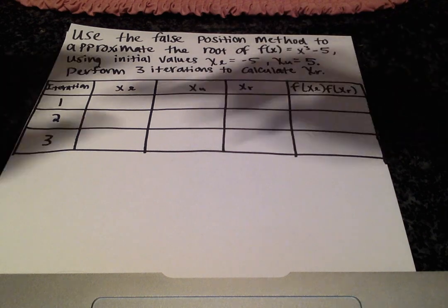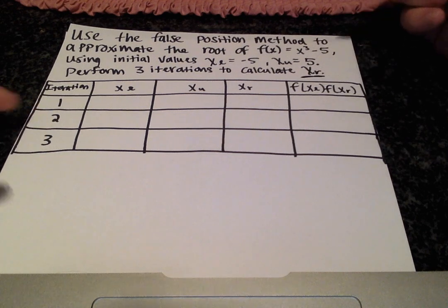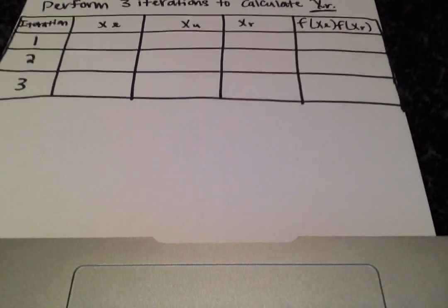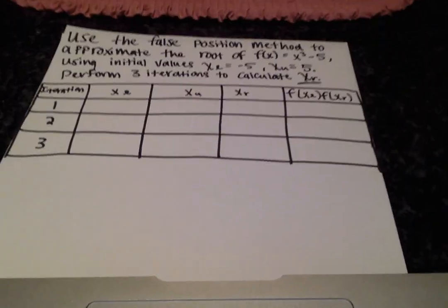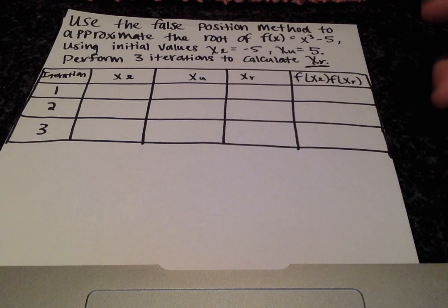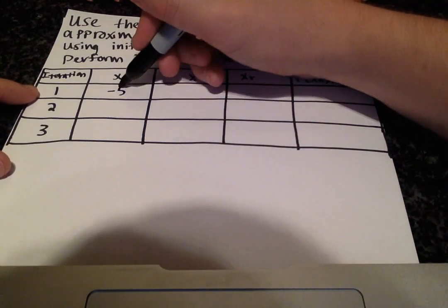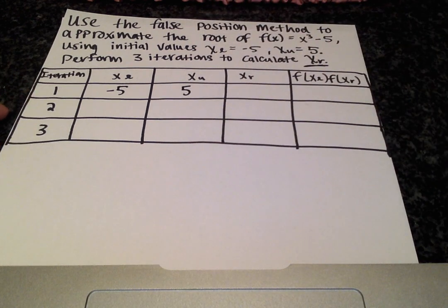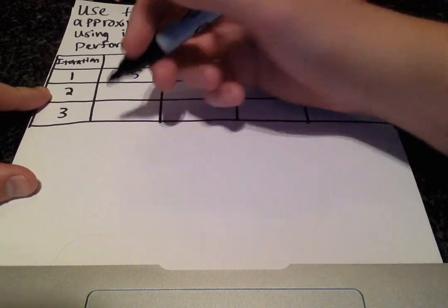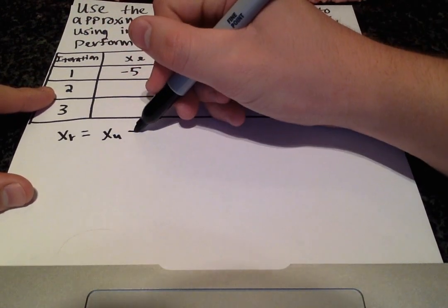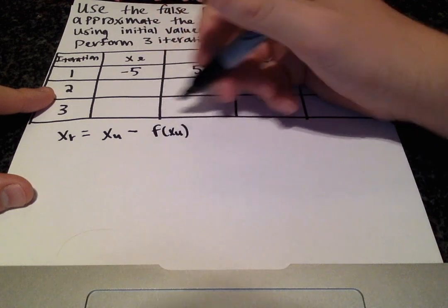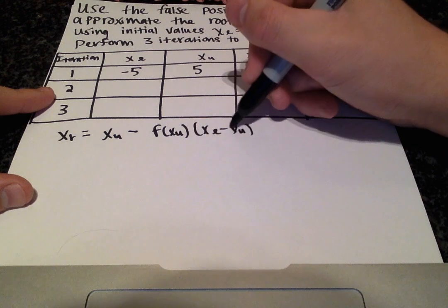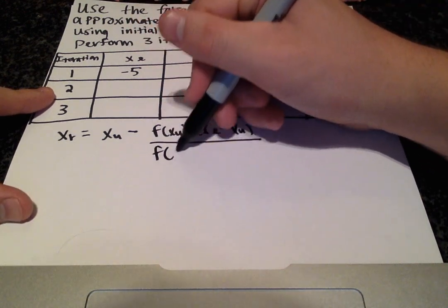We want to perform three iterations to calculate our x-r value. We have a handy table here and we can start to fill in some values. We have our lower limit of negative 5 and upper limit of 5, and we need to calculate our x-r value using the general formula: x-r equals x-upper minus f of x-upper times (x-lower minus x-upper), all over f of x-lower.